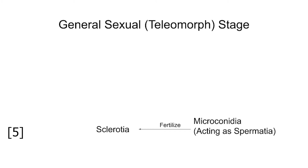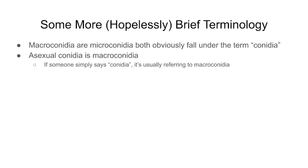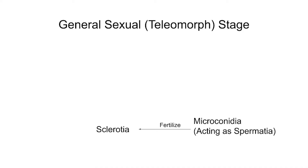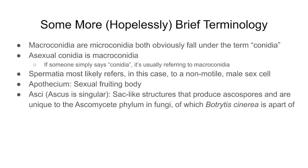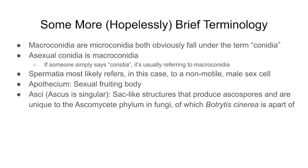For the teleomorph, Botryotinia fuckeliana, sclerotia are fertilized by microconidia, which function as spermatia. Microconidia and macroconidia are both types of conidia — when someone says 'conidia,' macroconidia is most likely being referred to. The microconidia fertilize the sclerotia and induce the formation of apothecia, the sexual structures of Botrytis cinerea. Apothecia give rise to asci — sac-like structures where ascospores are produced — which germinate and infect living plant tissue. Asci are the defining features of members of the Ascomycete fungal phylum. The sexual stage is far less common in the field than the asexual stage.